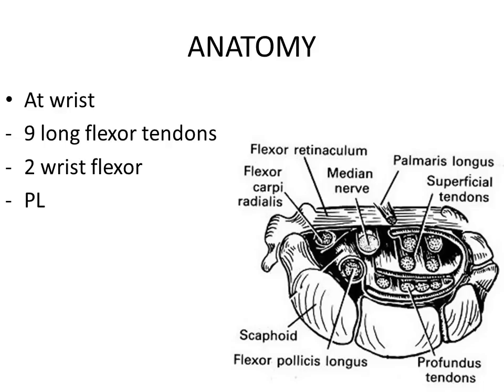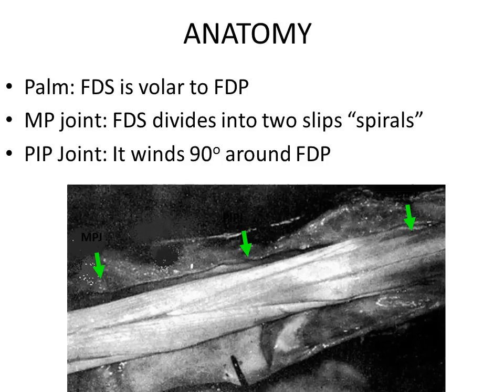The unique nature of the flexor tendons is that the flexor digitorum superficialis is named as such because the belly of the muscle lies superficial to the profundus in the forearm. In the palm, the FDS remains volar to the FDP, but the FDS must be inserted into the base of the middle phalanx. Therefore, it splits at the level of the neck of the metacarpal head to form two slips of the FDS, which spiral around the FDP tendon at the level of the proximal phalanx, then confluate together at the level of the neck, and insert into the base of the middle phalanx.